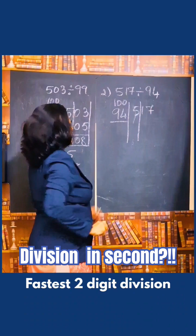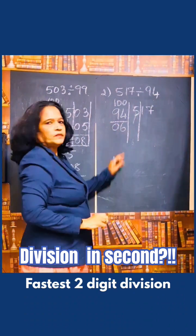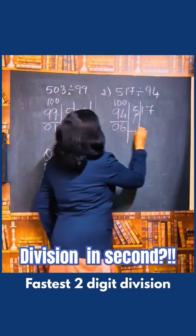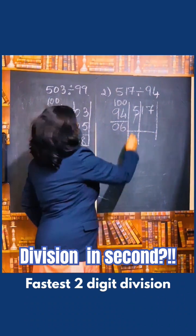Find the difference. Difference is 06. Now, as simple as what we have done earlier. Write this 5 as it is.